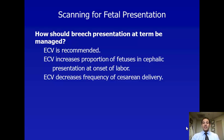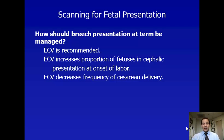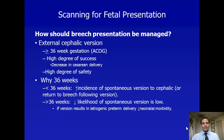How should breech presentation at term be managed? Once we've found a baby to be in breech presentation, we recommend an external cephalic version, abbreviated ECV. External cephalic version is where we use ultrasound and our own hands to help rotate the baby from breech to cephalic presentation. Version has been shown to increase the proportion of fetuses in cephalic presentation at the onset of labor and decrease the frequency of cesarean delivery. Cesarean section rates in the United States have climbed, so anything we can do to decrease that frequency is a step in the right direction. ACOG does recommend external cephalic version.